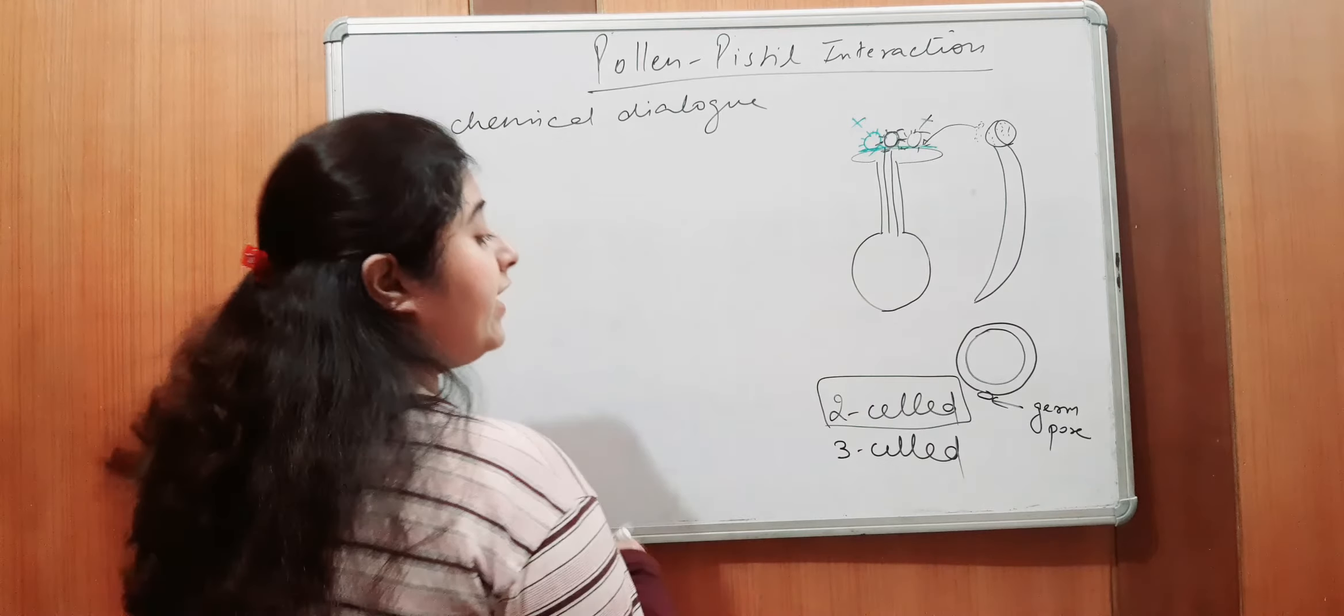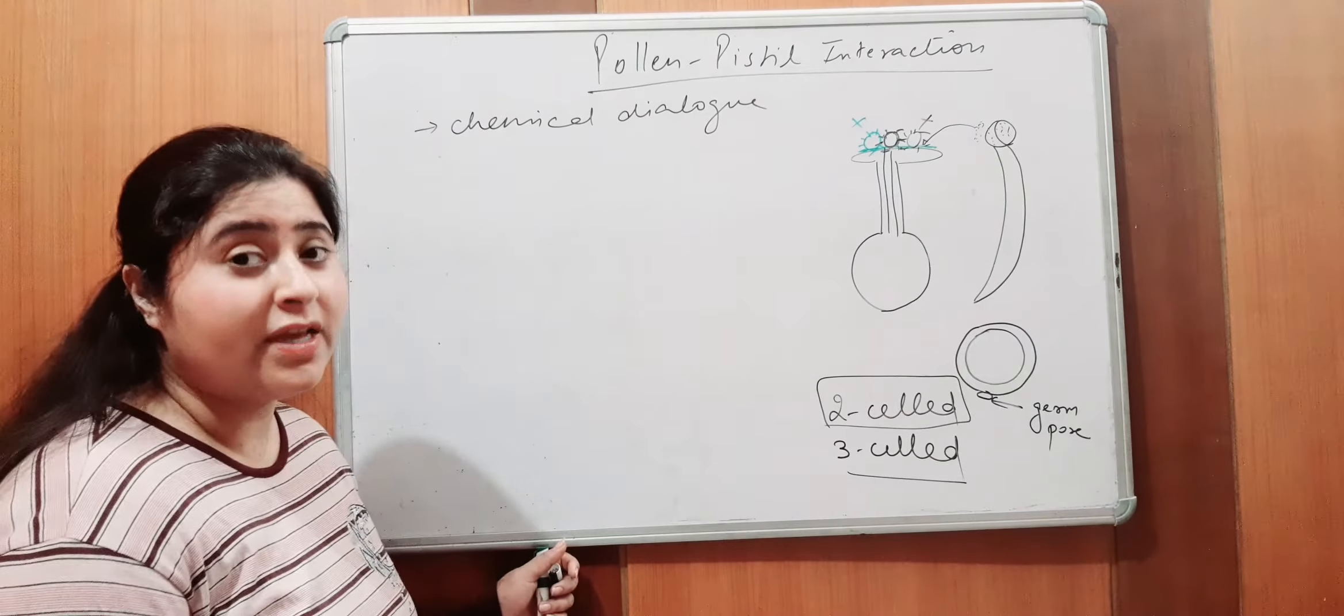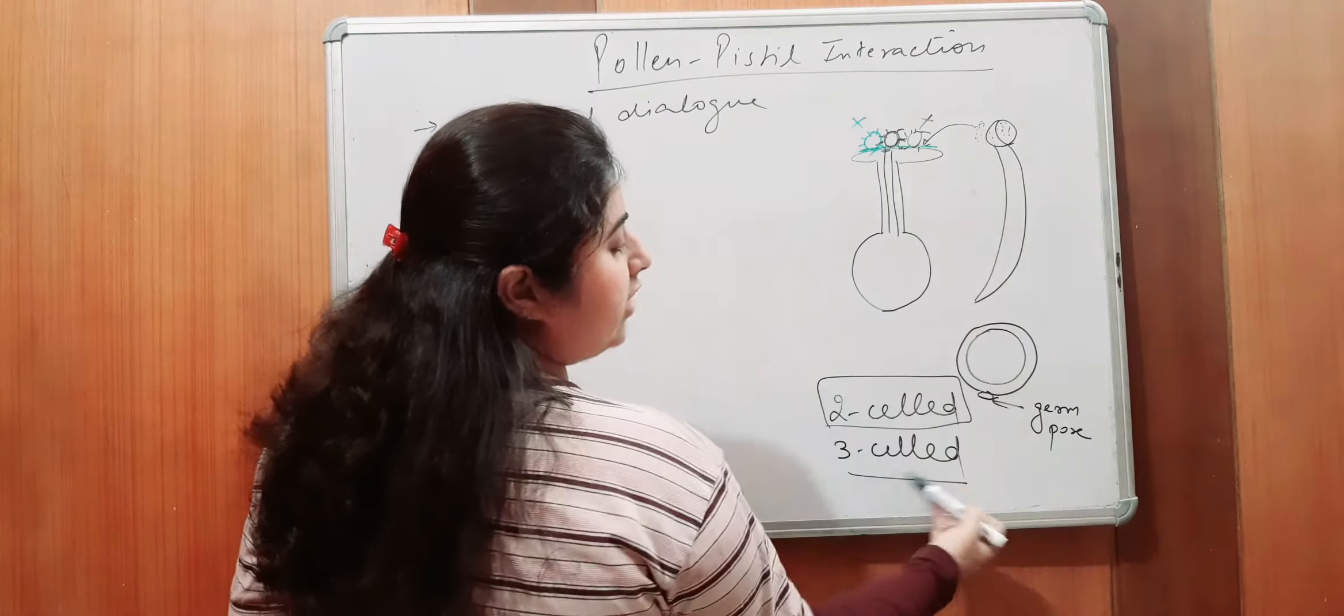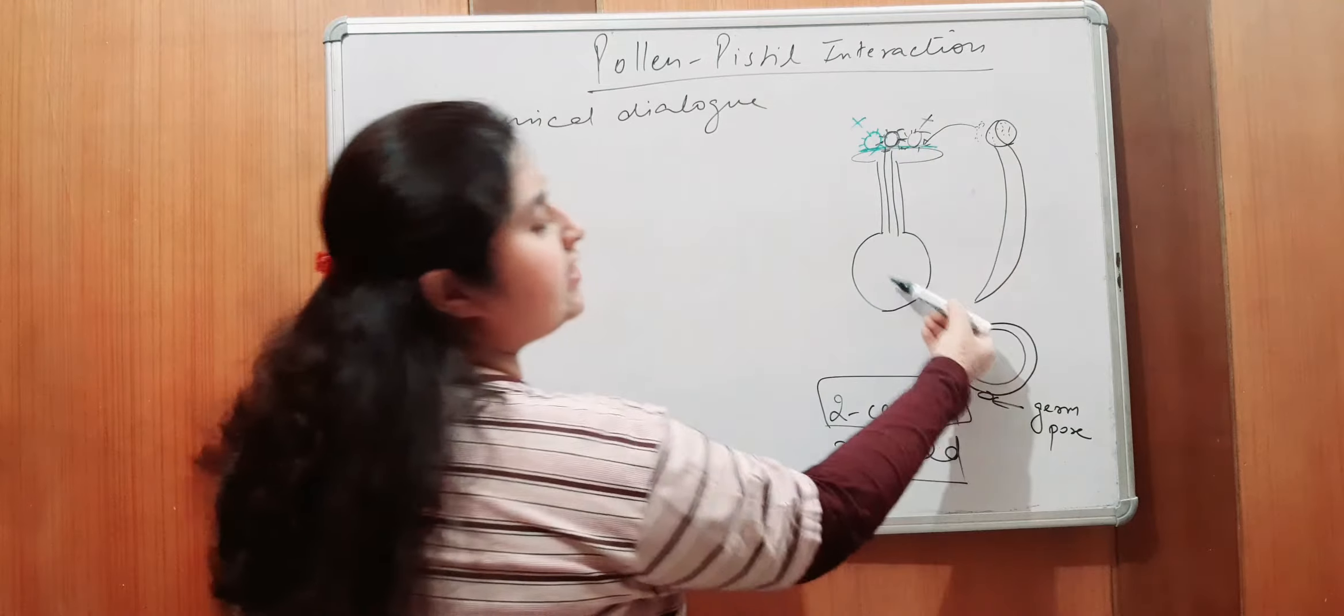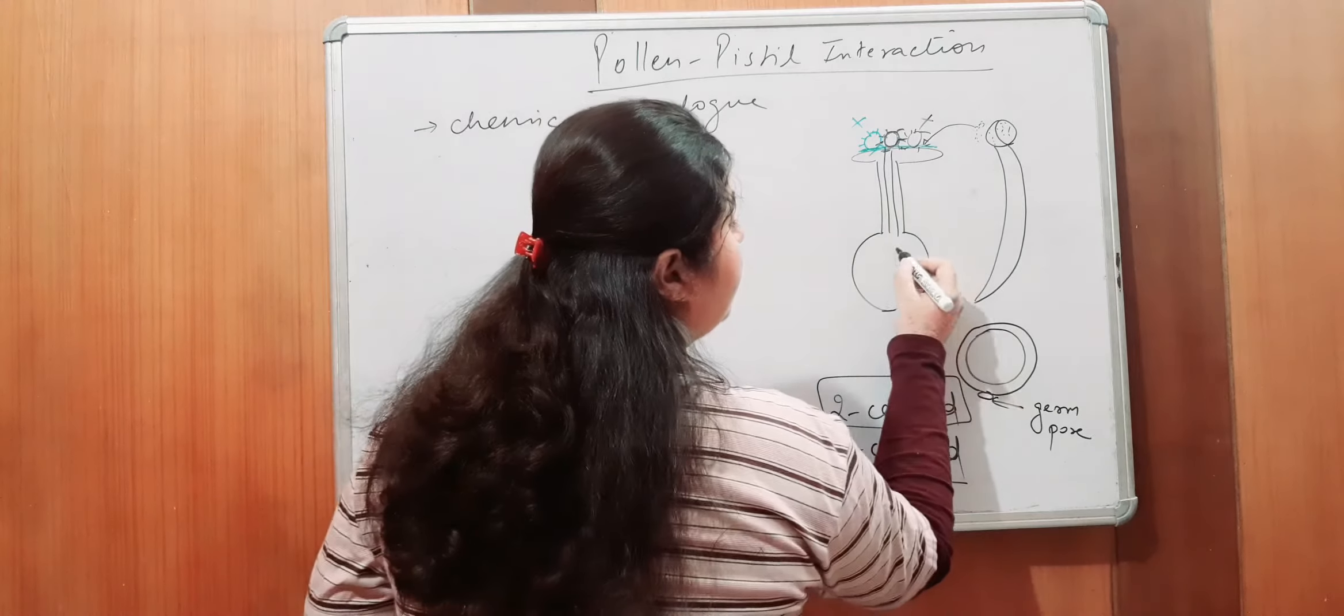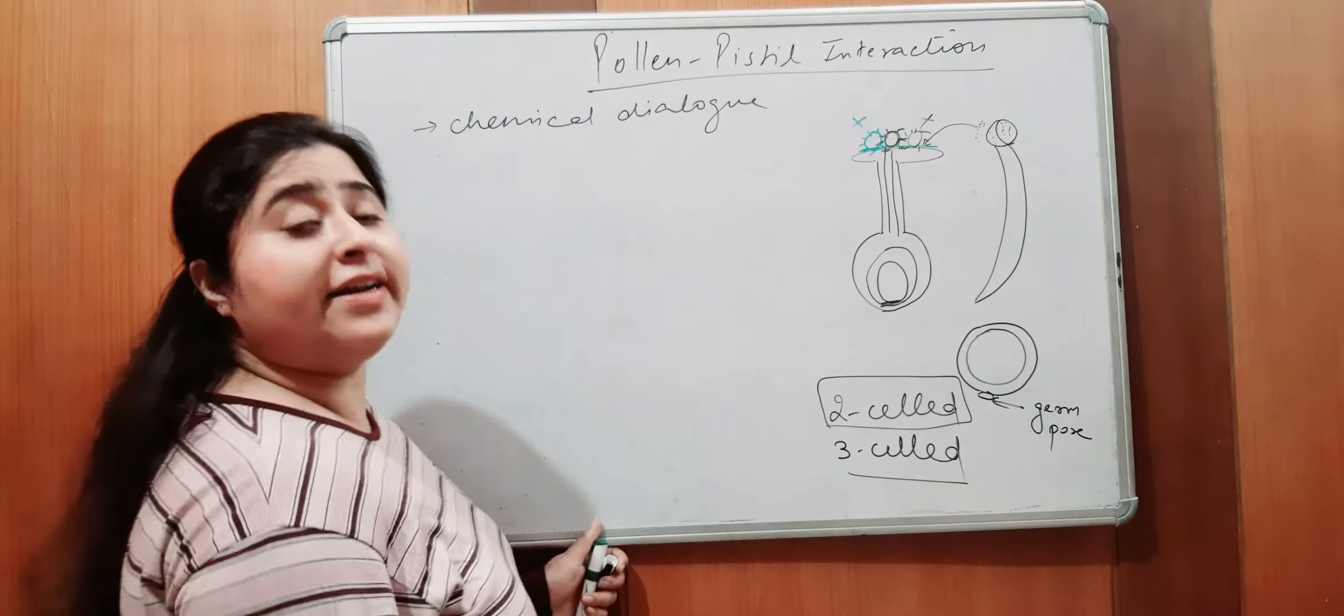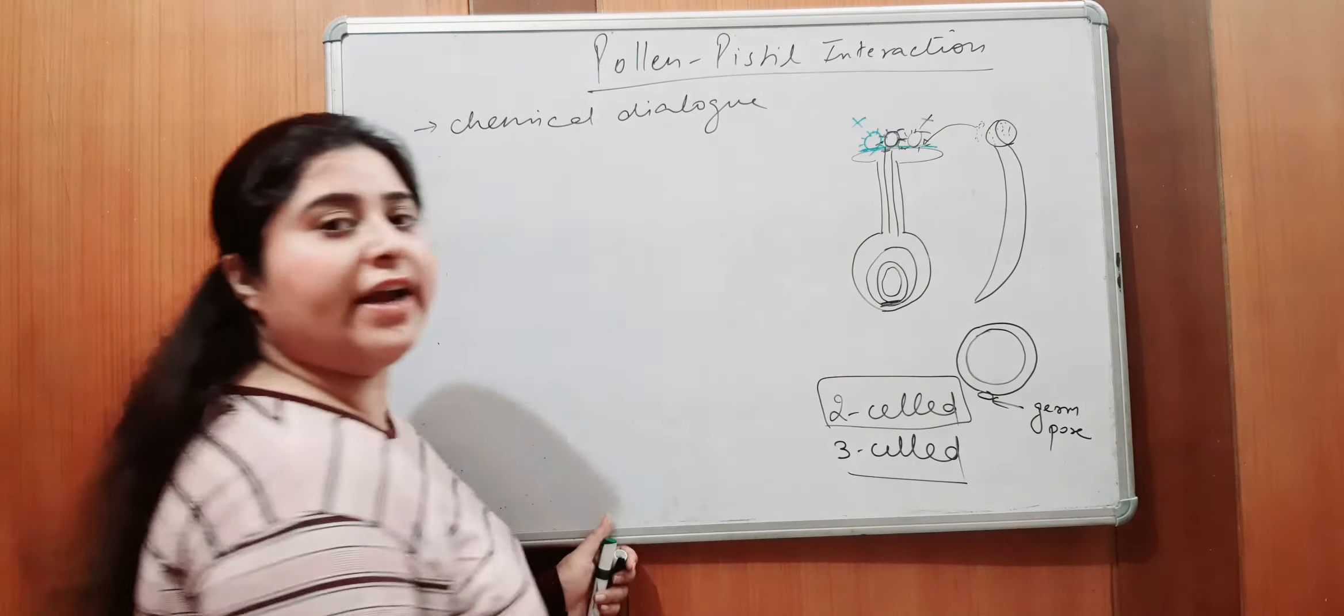Baatche, agar toh, yeh three-celled condition mein enter kiya hai, pollen grain. Agar toh, yeh three-celled condition mein enter kiya hai, toh, sitha-sitha yeh pollen grain se, yeh jho three-cells hai, they will enter and reach inside the ovary. Aapko ovary ka bhi yad hooga? Ovary mein, there is an ovarian cavity, ovarian cavity mein there is a tissue placenta, through which the ovule is attached, in which the embryo sac, female gametophyte is present.